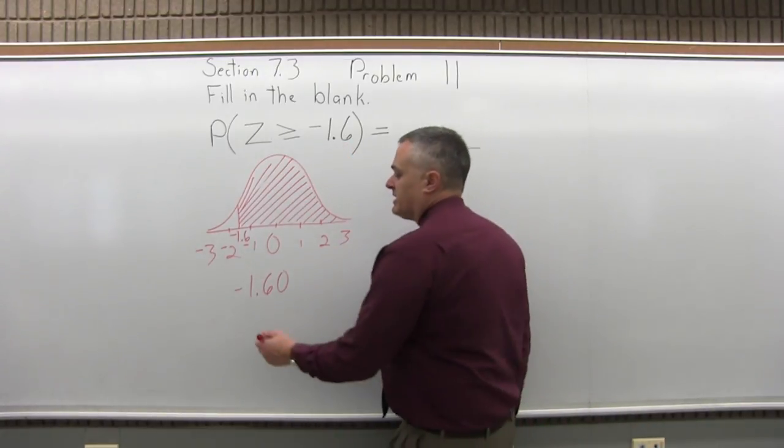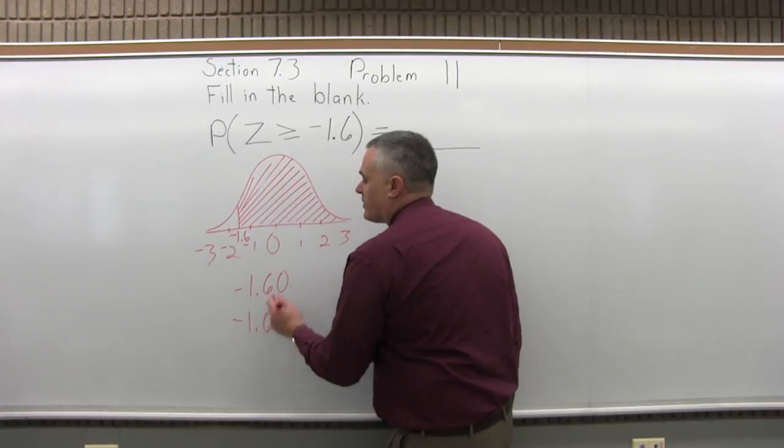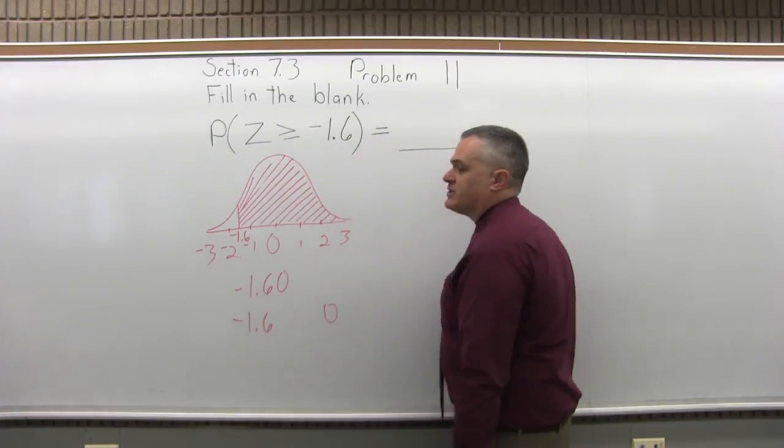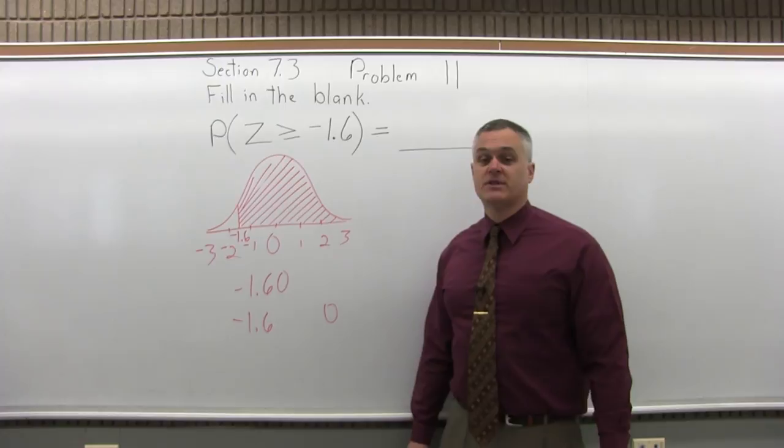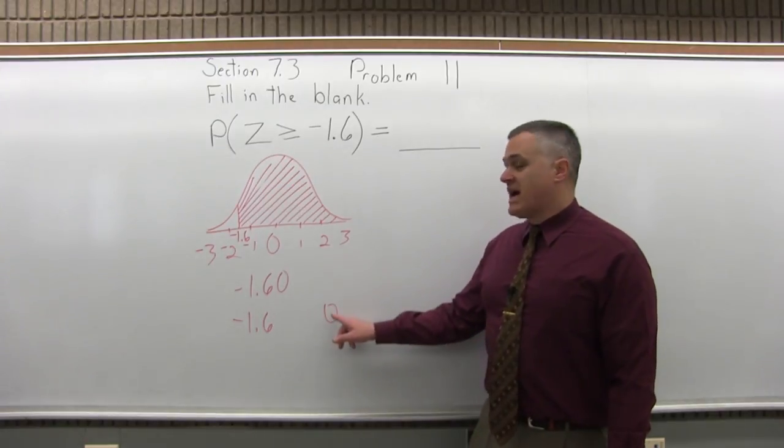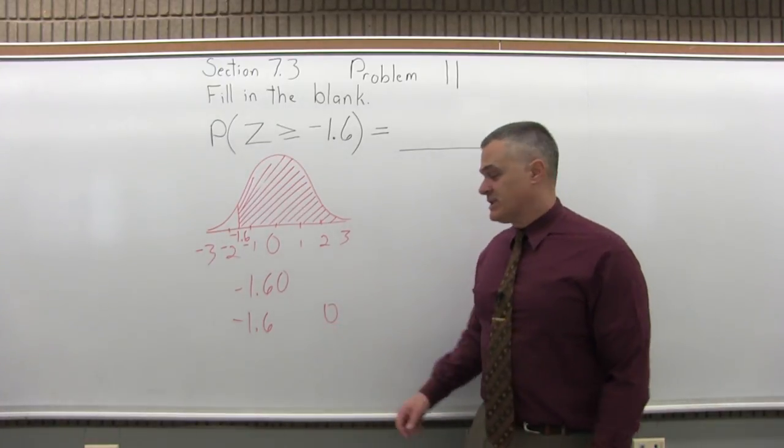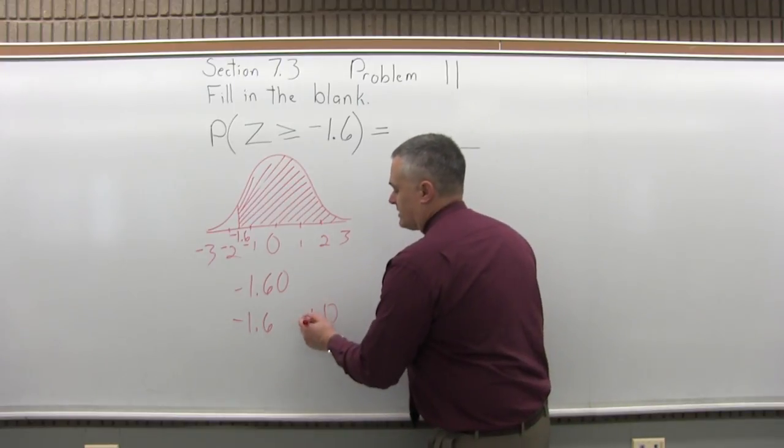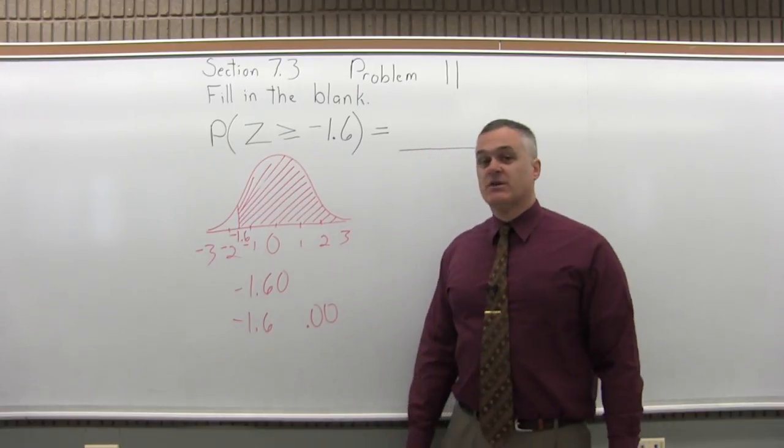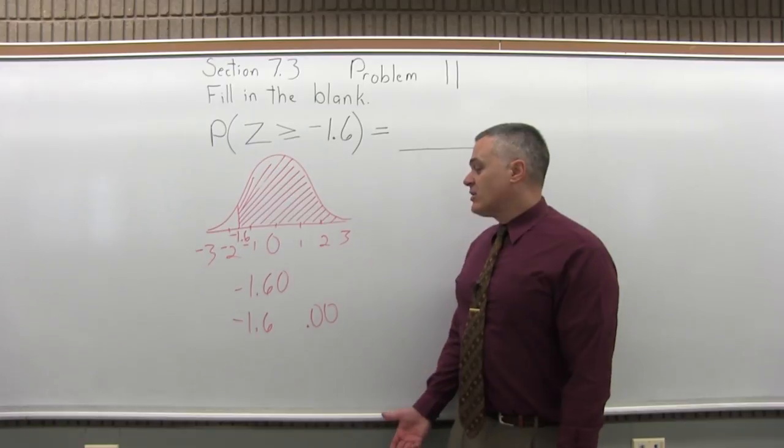The second step is split the number into two parts by pulling off the rightmost digit. So that zero that I just added, I immediately pull it off to the side. The third step is write a point zero in front of the rightmost digit that you pull off. So instead of zero, I write it as point zero zero. And now I go to the chart.